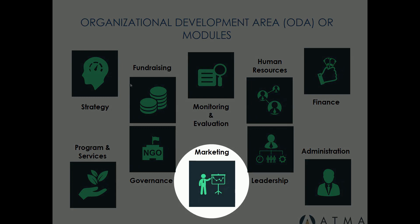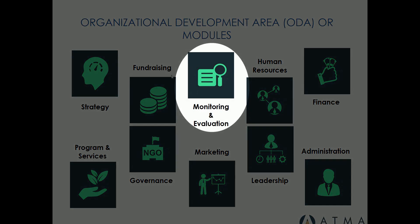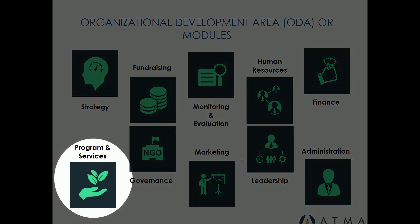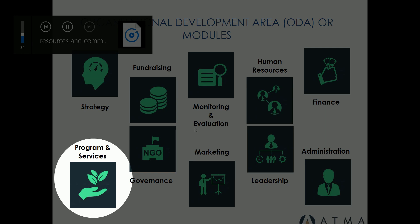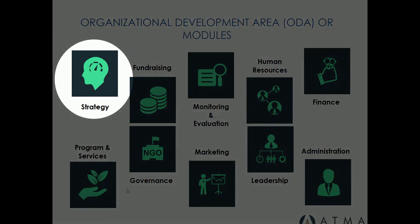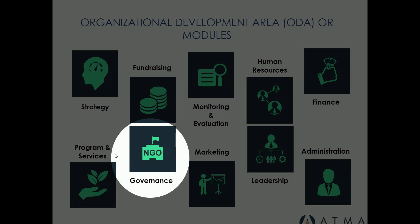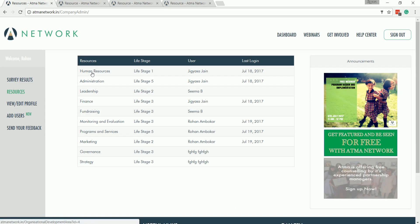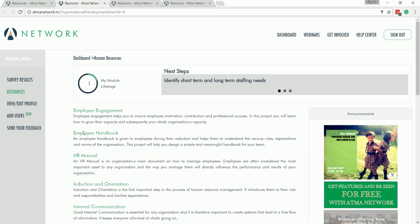Marketing also helps organizations establish their own brand. Monitoring and Evaluation helps organizations assess their impact. Programs mainly helps organizations design, document, and expand and scale their programs. Strategy helps organizations plan well for the next coming years. Governance helps organizations manage their board effectively. Now, if you click on any of these modules, you'll find a list of projects under that category.